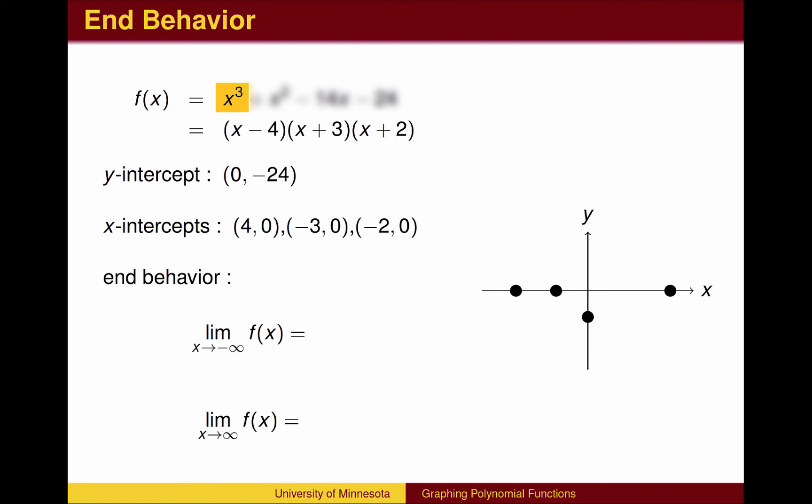Since it's an odd power, we know that it will go up on the right and down on the left. We can now put all the pieces together to sketch the graph. The graph goes down on the left, crosses through the intercepts, and finishes by going up on the right.